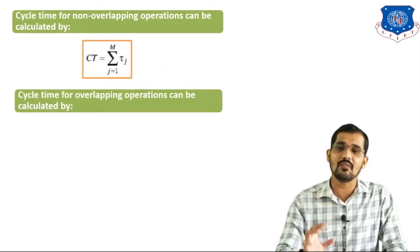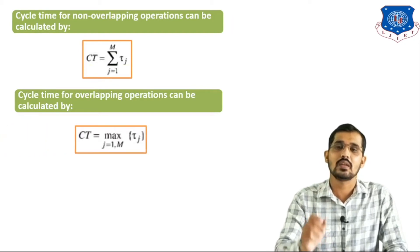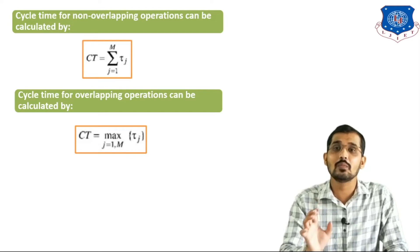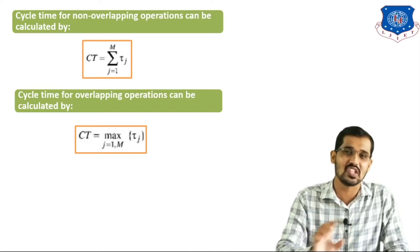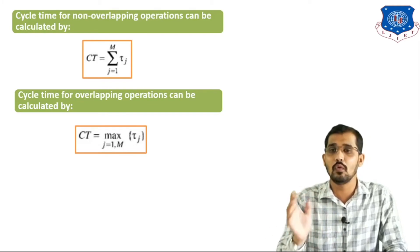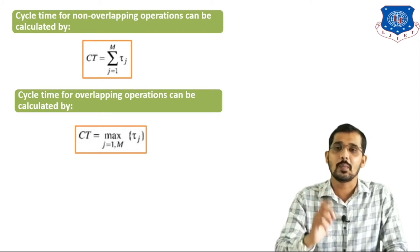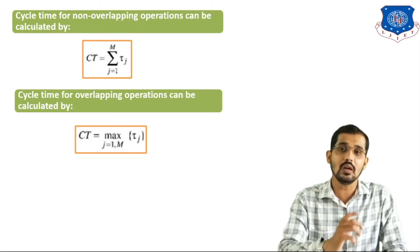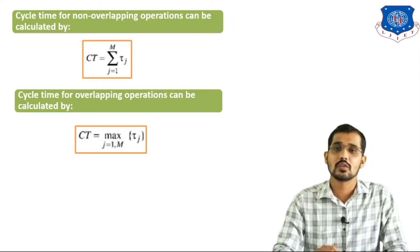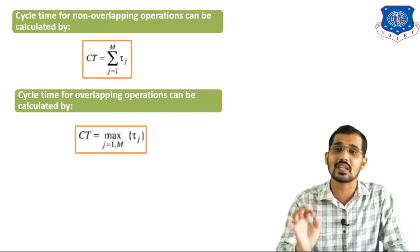Cycle time for overlapping operations is calculated using the maximum of the time requirements for all stages: Ct equals maximum of Tj. For example, with 4 hours for the reactor, 1 hour for the mixer, 2 hours for the centrifuge, and 1 hour for the dryer, the maximum is 4 hours. So the cycle time for overlapping operation is 4 hours.